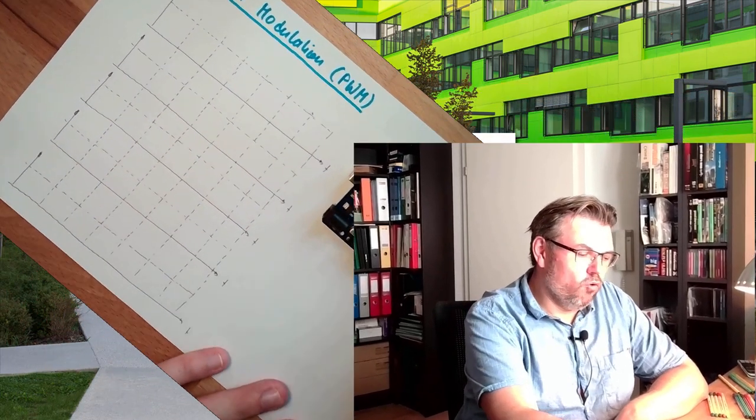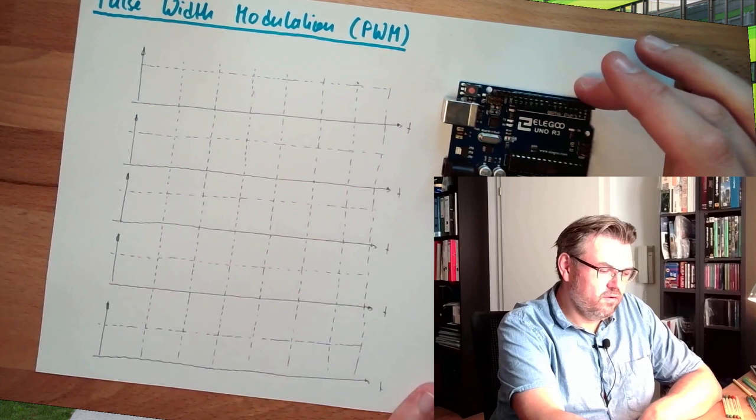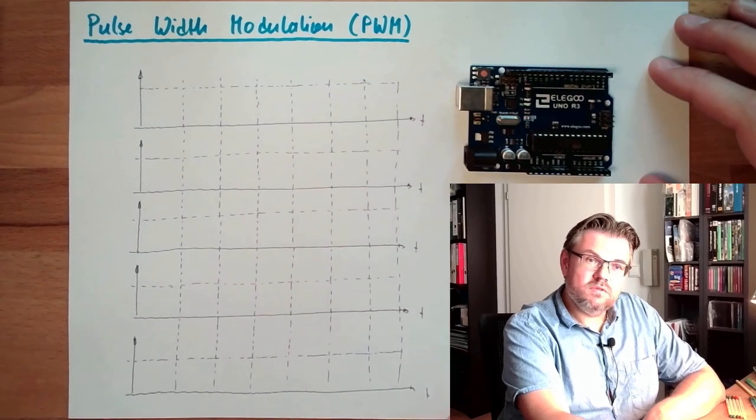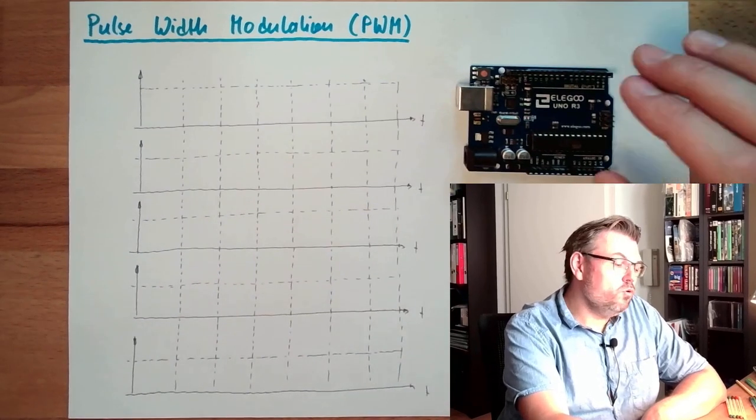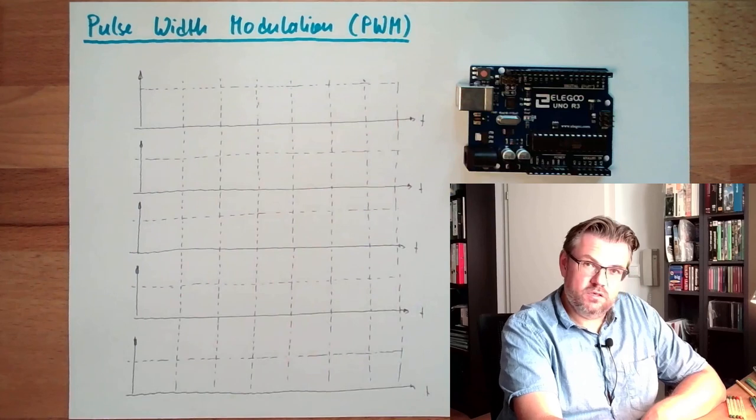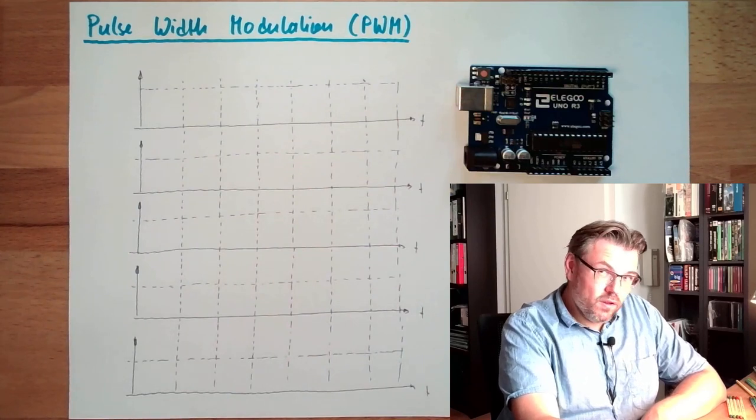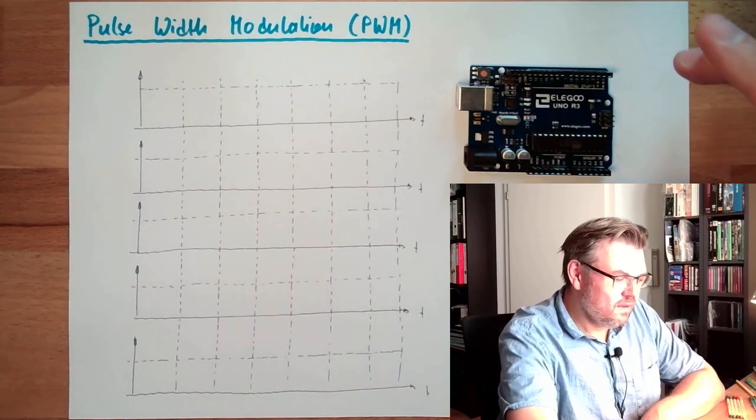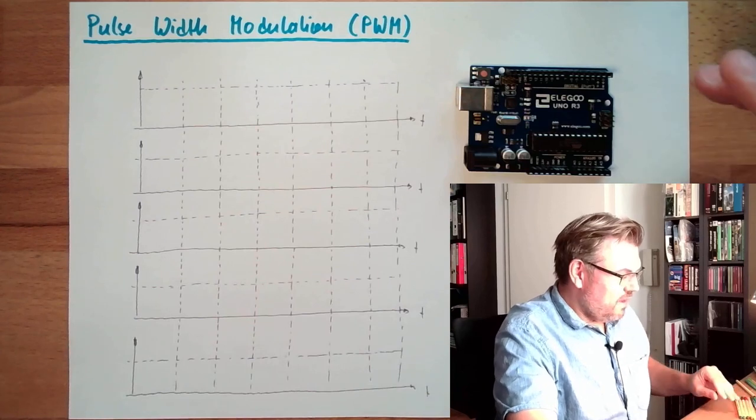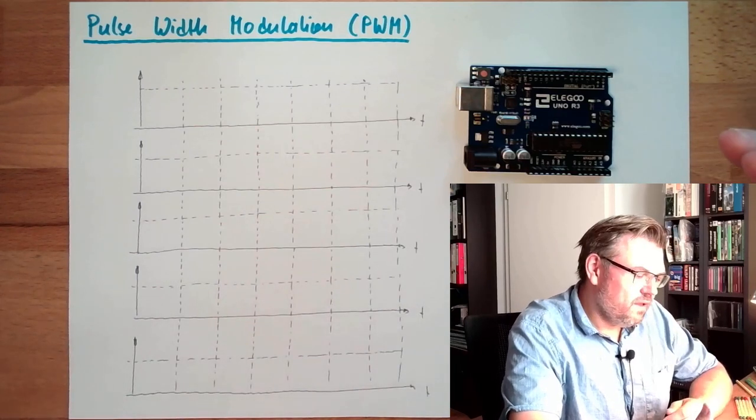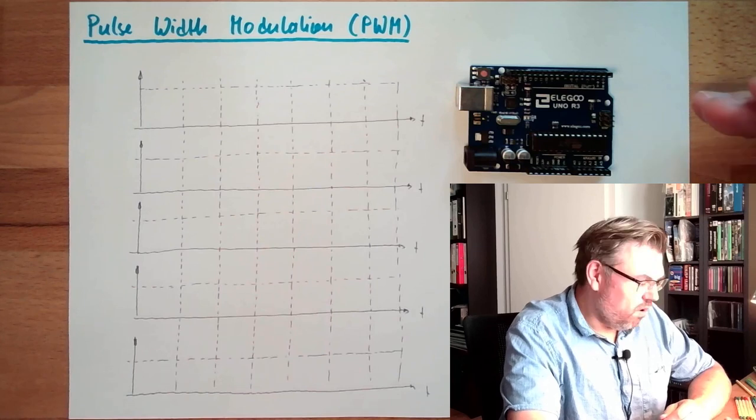I try to explain what is the Pulse Width Modulation. On our Arduino, we do have outputs, digital in and outputs. I told you in a previous video, some of these outputs are available for so-called Pulse Width Modulation. What does it mean? Well, there are two extremes of an output. Either it's all the time off.